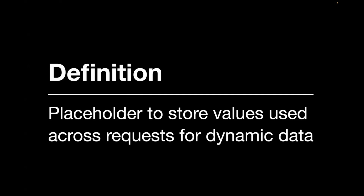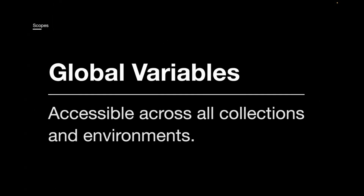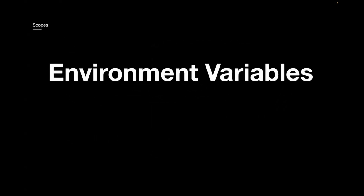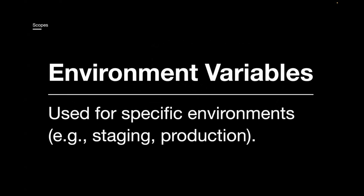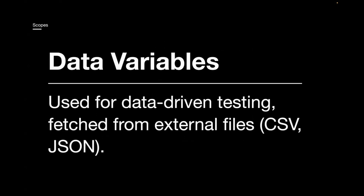Postman supports variables at different scopes. First is global variable, which can be accessed across all the collections and environments. Then comes the collection variable, which is shared across all the requests in a specific collection. Next is environment variable, which is used for a specific environment, for example staging or production. Then comes data variable, used for data-driven testing — if you want to do data-driven testing using CSV or JSON, you can use data variable.